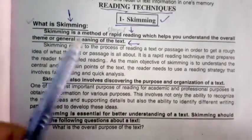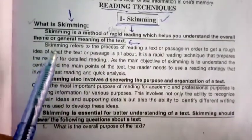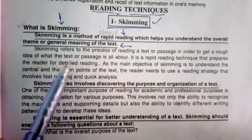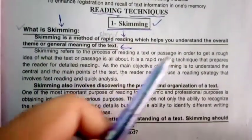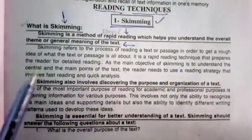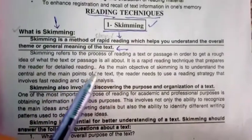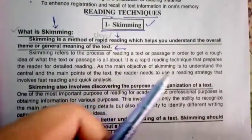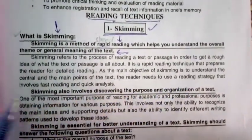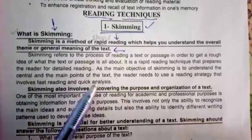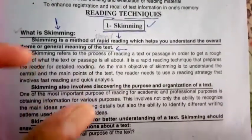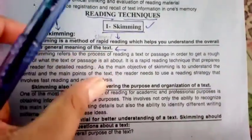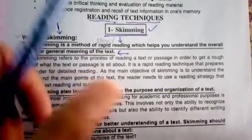For example, I am reading — refer to cross a passage in order to get an idea of the text passage or whatever it may be. So here, this paragraph is telling what Scheming actually is.